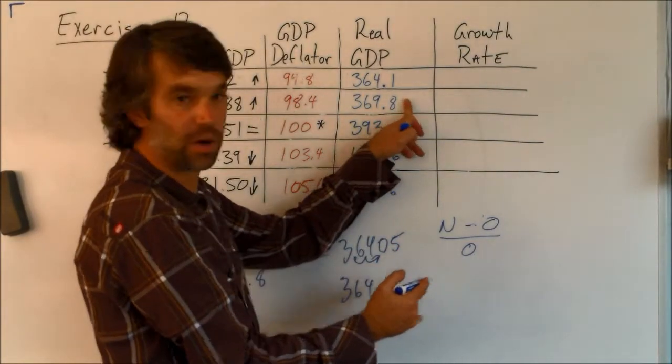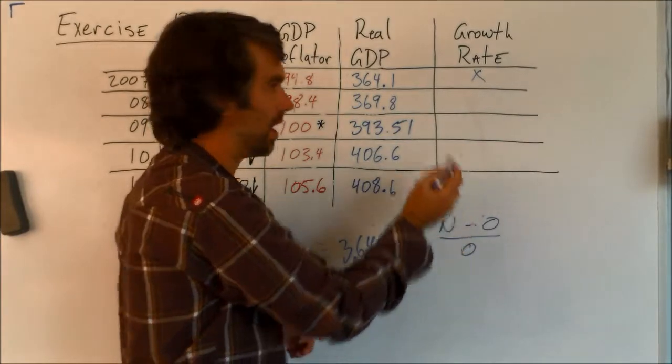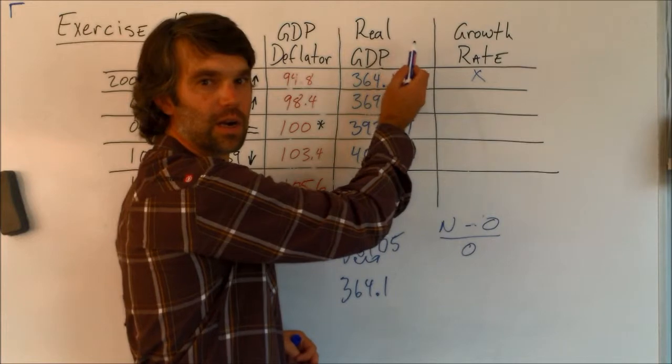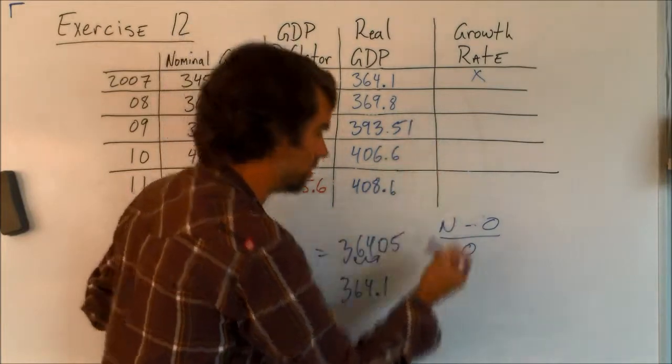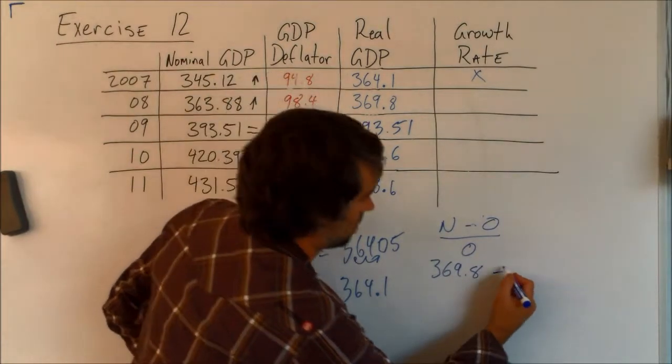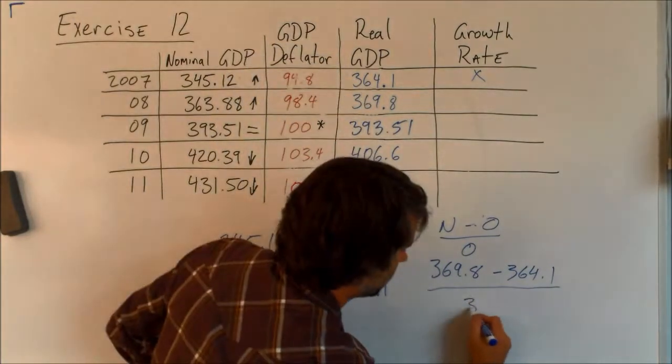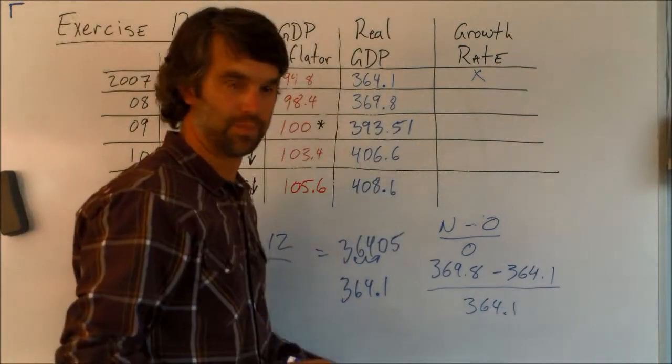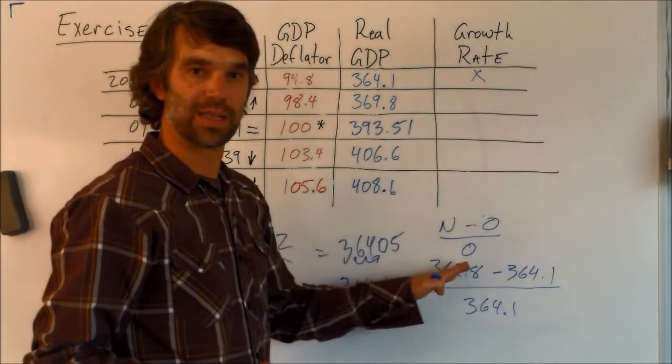I'll set up the first one, and then we'll just look at the answers. So the first one, our new number is the second number. By the way, we're not solving for a growth rate there. We don't know how much this country grew in this year because we don't know the previous year. So we're really just solving for these four. So 369.8 is the new minus 364.1 divided by the same number. So that's set up properly.